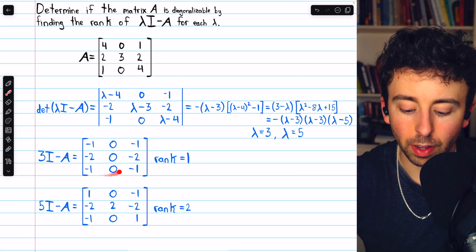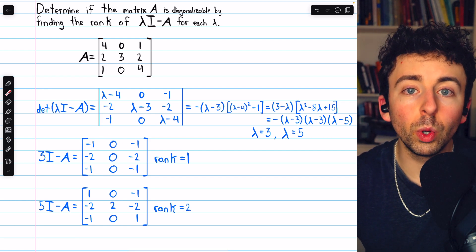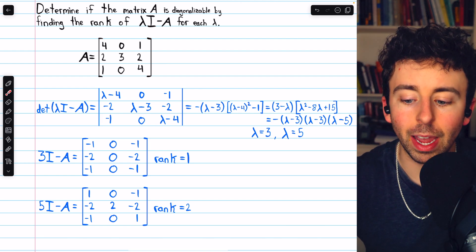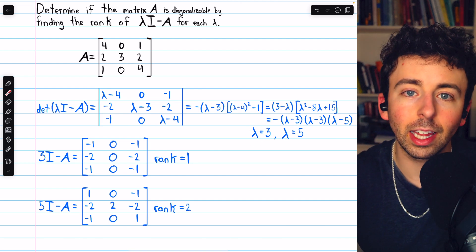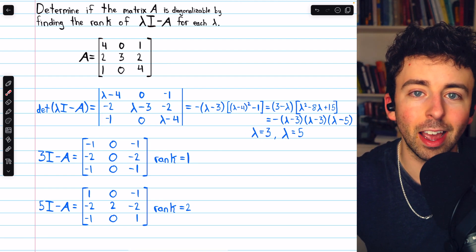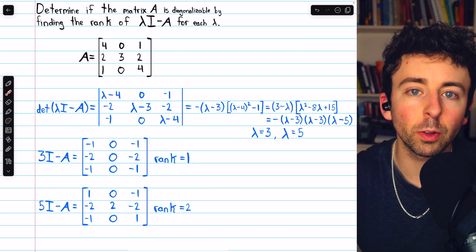The nullity of this matrix, for example, will be the dimension of the eigenspace corresponding to lambda equals 3. That tells us how many linearly independent eigenvectors there are.